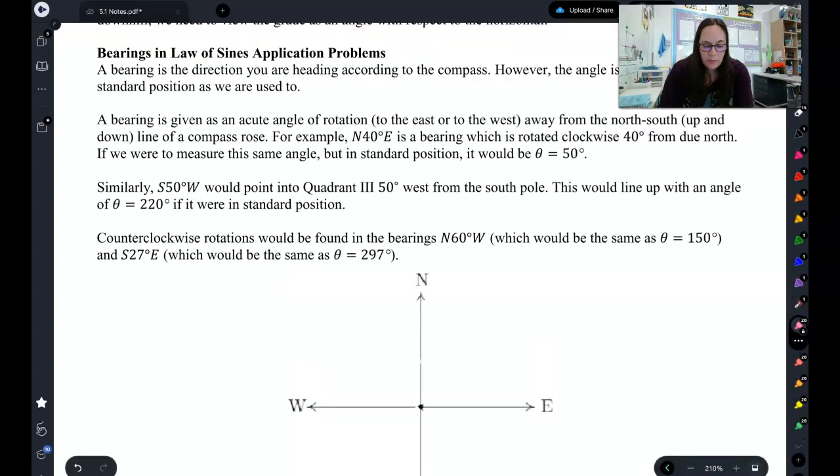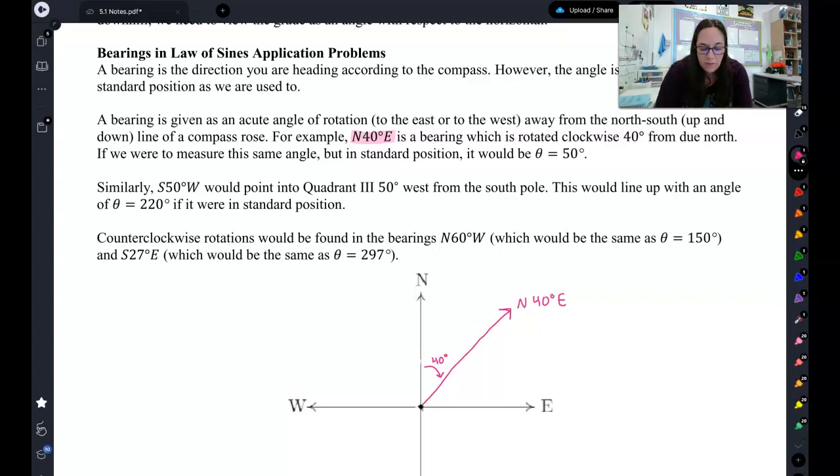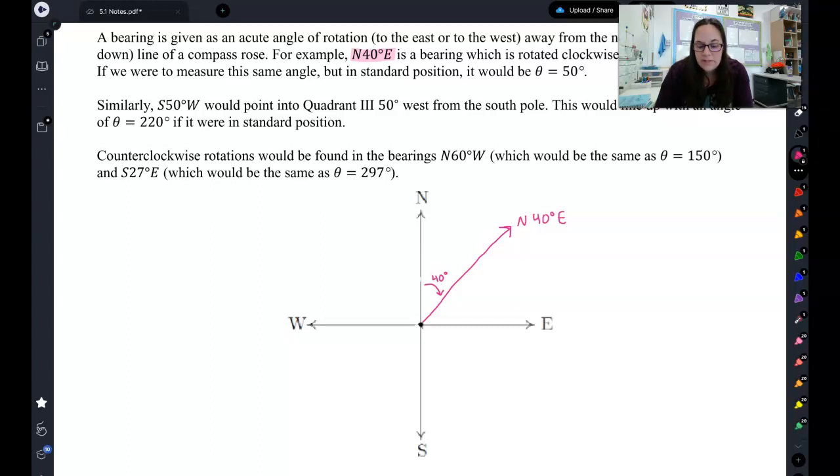Let's say, for example, I tell you that the bearing is north 40 degrees east. So that means we start up here at north, and then I'm going to go 40 degrees in the east direction. So that would end up about there. 40 degrees in the east direction. That's north 40 degrees east. And if you think about that, so that's what it is as a bearing, north 40 degrees east. If we put it in standard position, that would be an angle of 50 degrees. Because remember, standard position always goes from the positive x-axis.